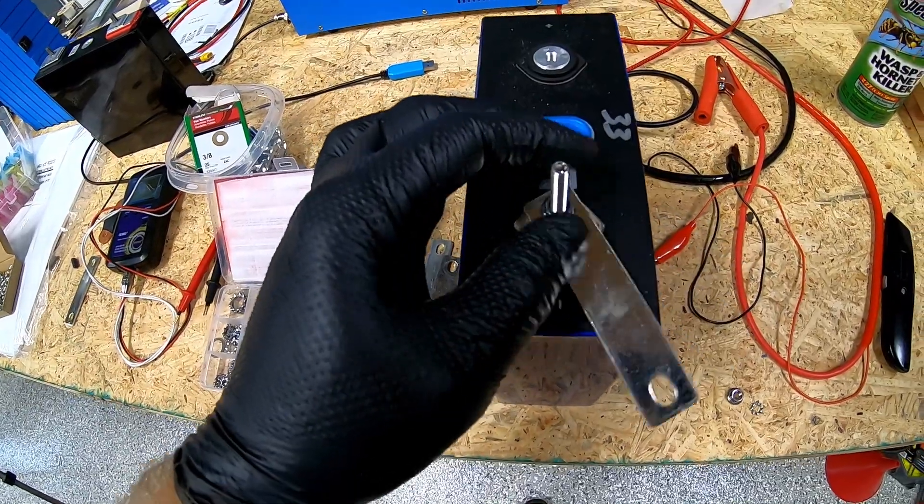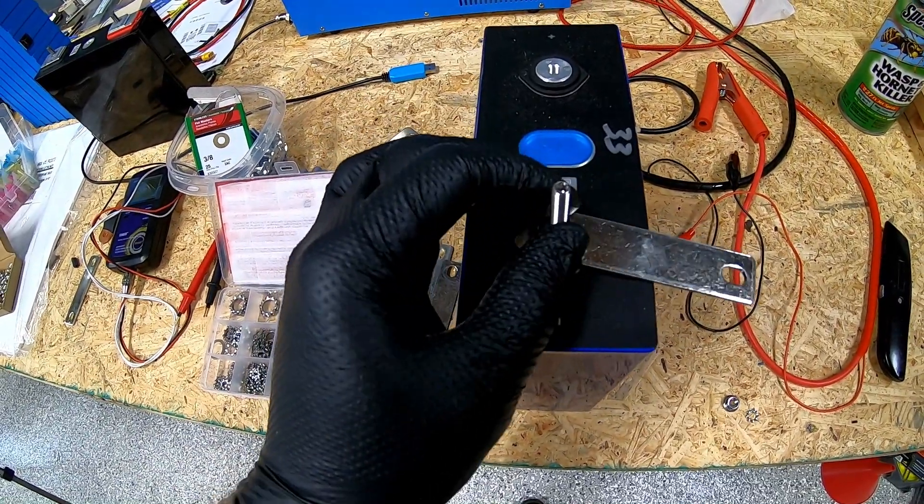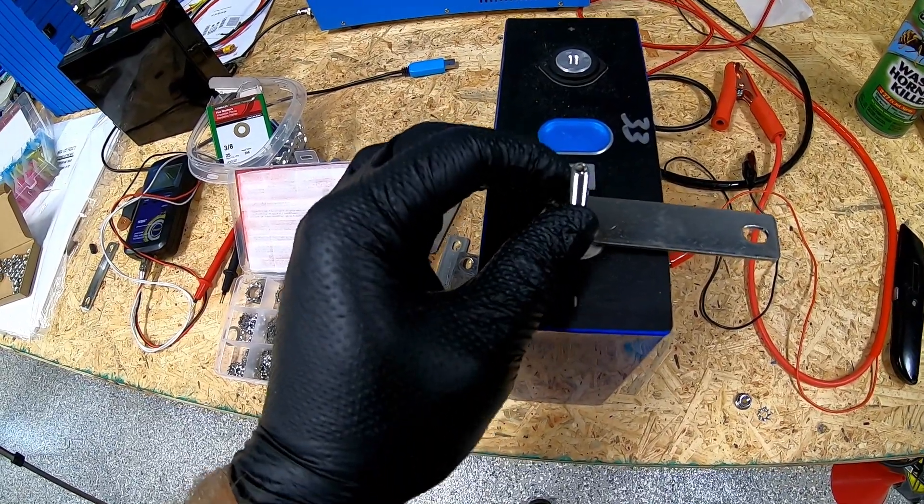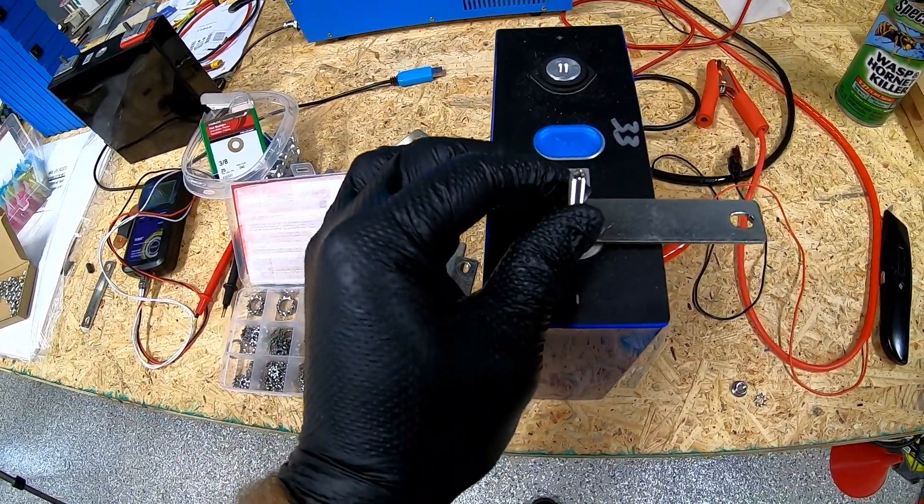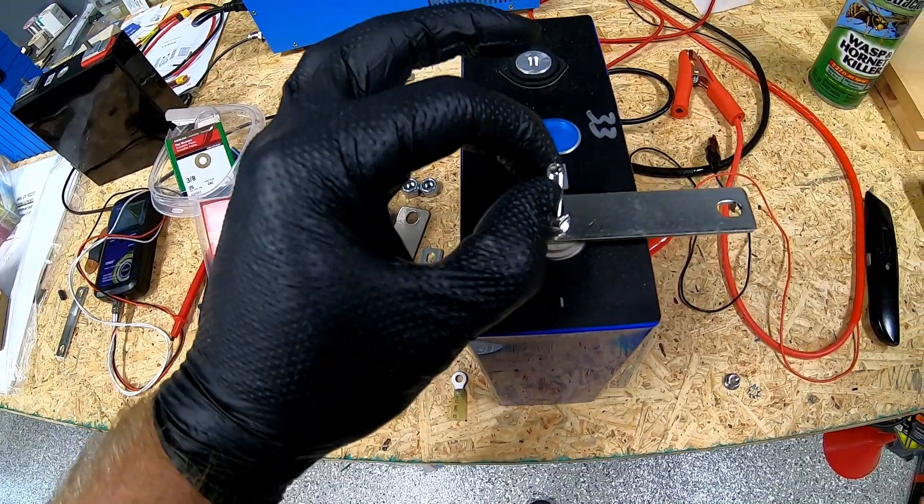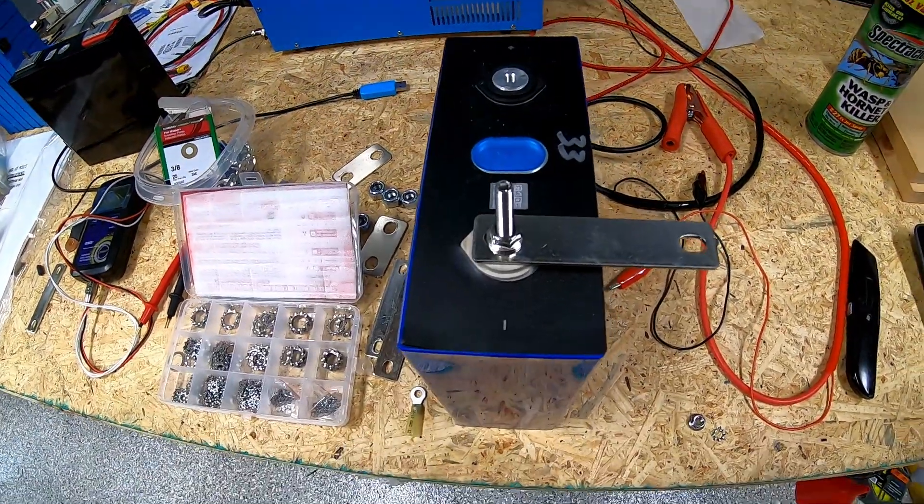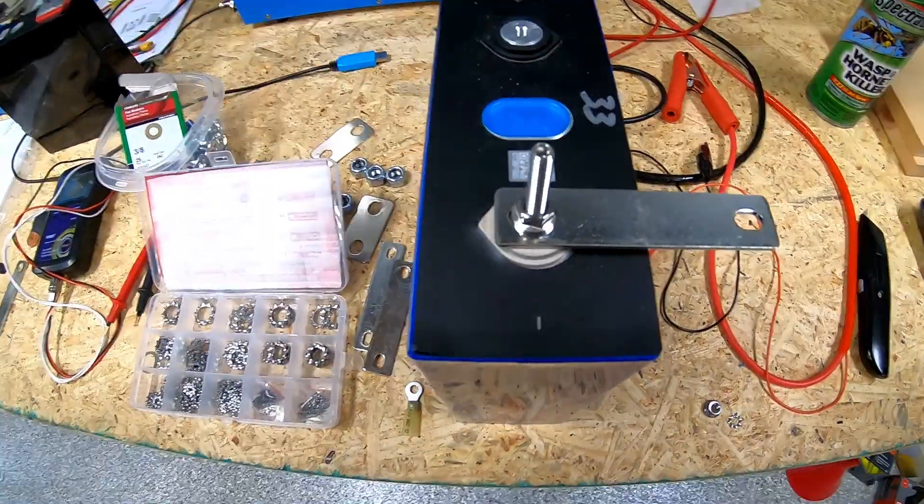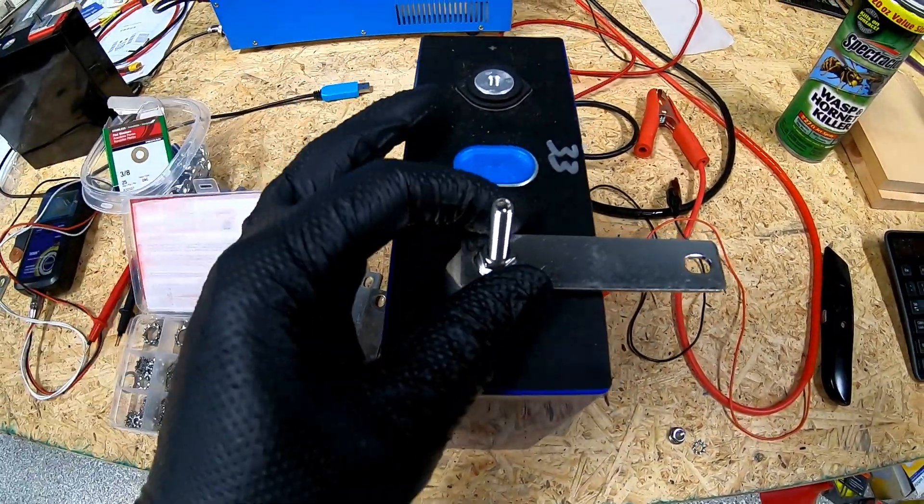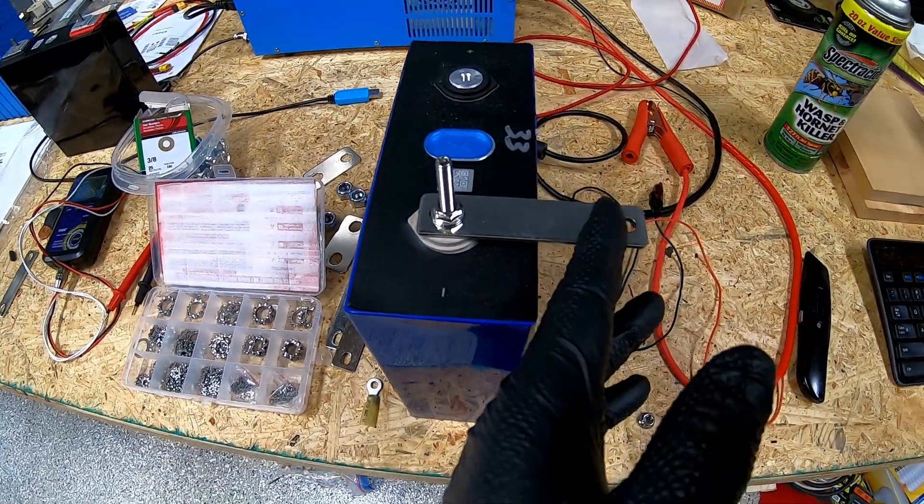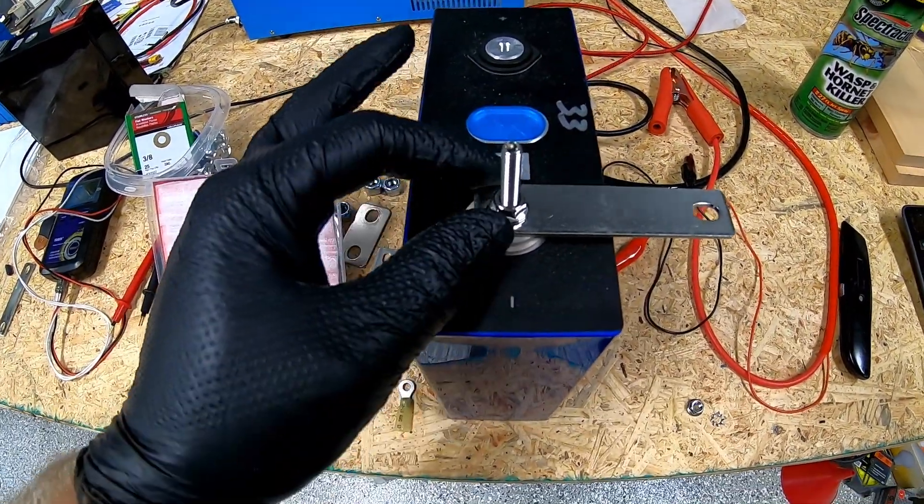This set screw or grub screw you see here is a little bit taller than what you get with the batteries. These were some slightly longer ones that we ordered I was going to use on the battery bank, but the studs that came with it were long enough.